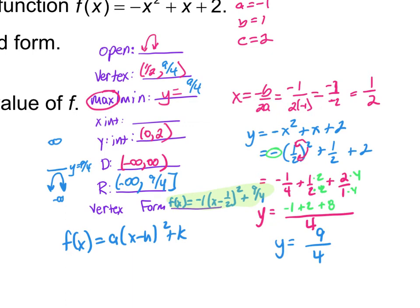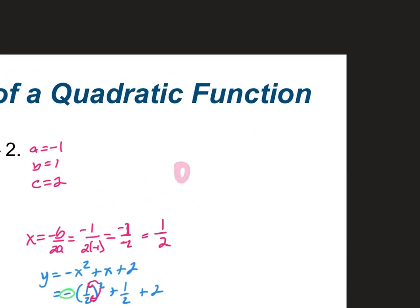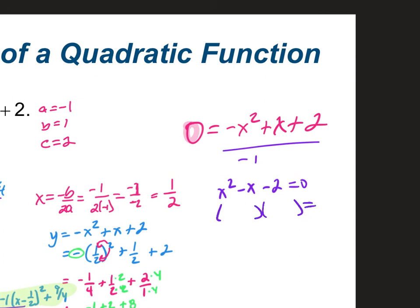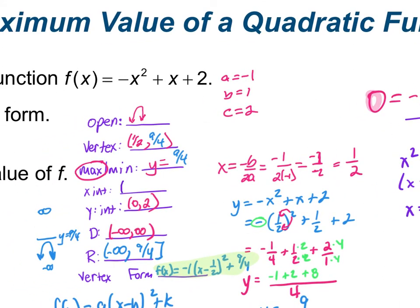To find x-intercepts: 0 = -x² + x + 2. We don't like when the quadratic begins with a negative, so factor out negative 1: x² - x - 2 = 0. Are there factors of negative 2 that multiply to give negative 2 but add to give negative 1? Yes: negative 2 and positive 1. So x = 2 and x = -1. The x-intercepts are at (2, 0) and (-1, 0).